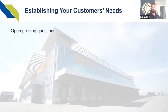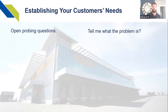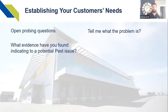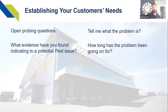We want to do that by carrying out open probing questions. Types of questions you want to be asking are really straightforward. "Tell me what the problem is" — a nice, easy, straightforward question that normally gives you a lot of information in the first instance. What evidence have they found indicating a potential pest issue? This could be that they've seen a rat at the bottom of the garden, they could have found droppings, there could be noises coming from an area of a property — various reasons as to why they believe they have a potential pest issue.